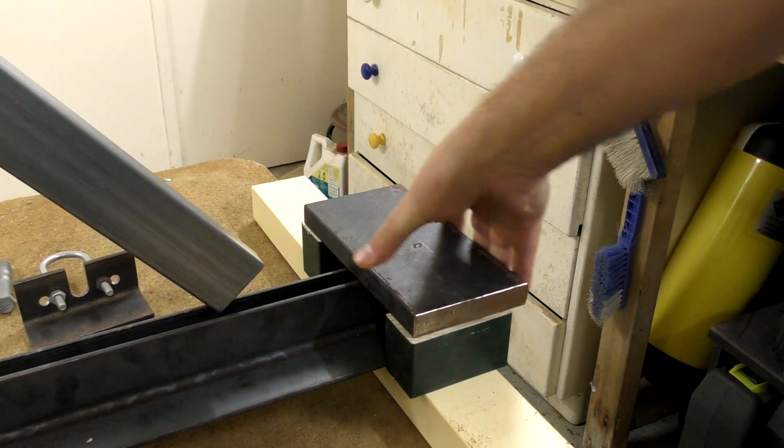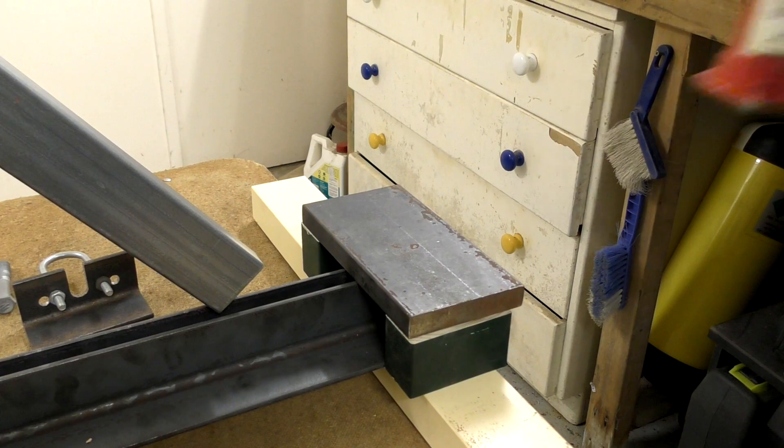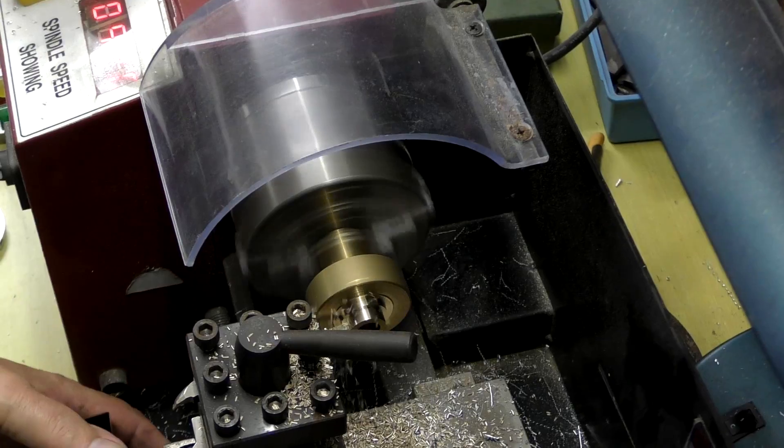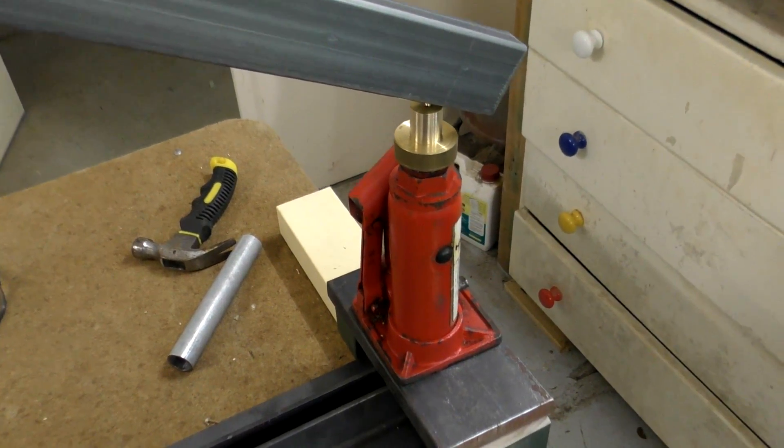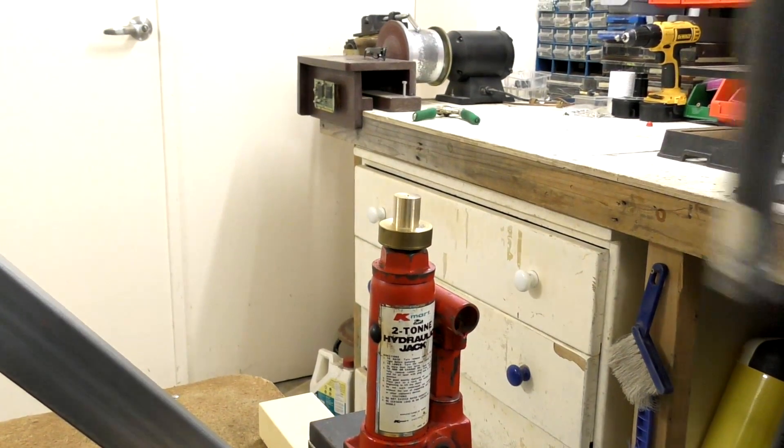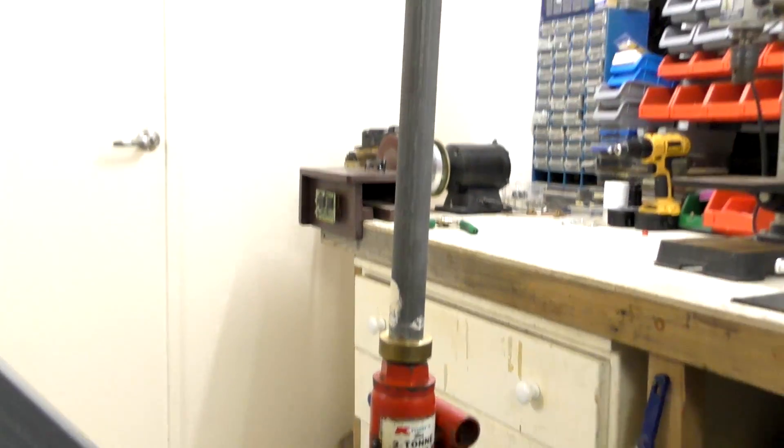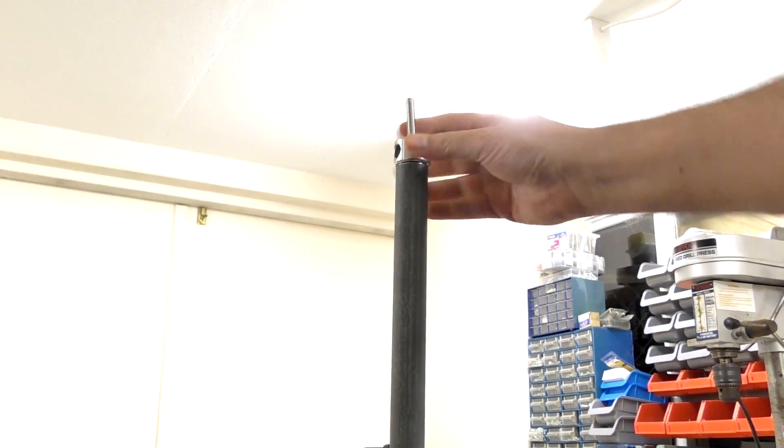Of course we don't want to be lifting this thing by hand, so we next mount the jack on the other side of the base. We machine this adapter so it sits on top of the jack. On top of the adapter is a piece of steel pipe, and on top of that is another adapter that fits into the hole in the lever.